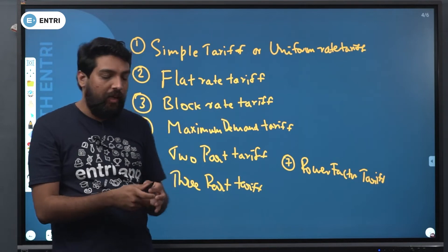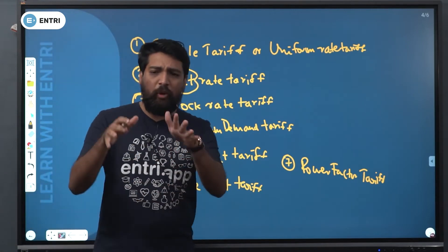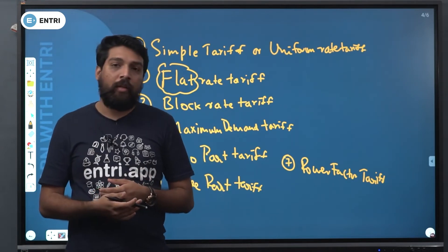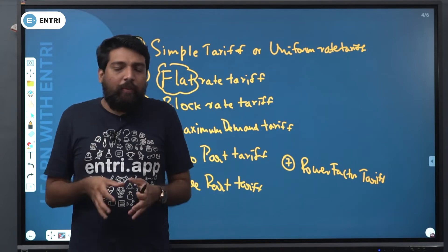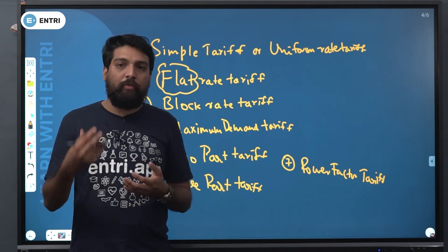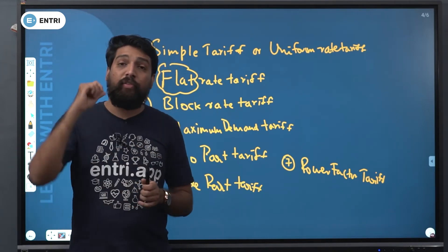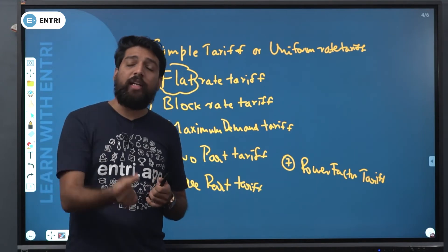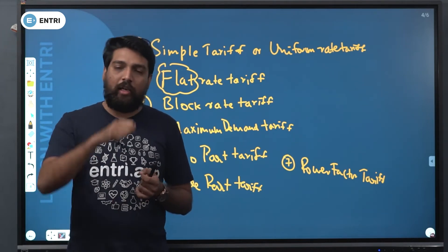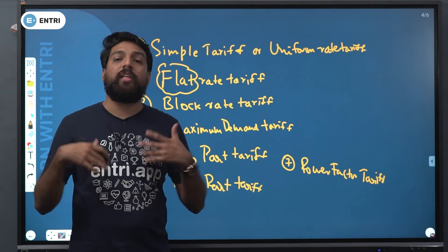The second is the flat rate tariff. Different consumers are charged at different rates depending on their category of use. For example, a residential building consumer has one rate while other consumer types have different flat rates applied to them.